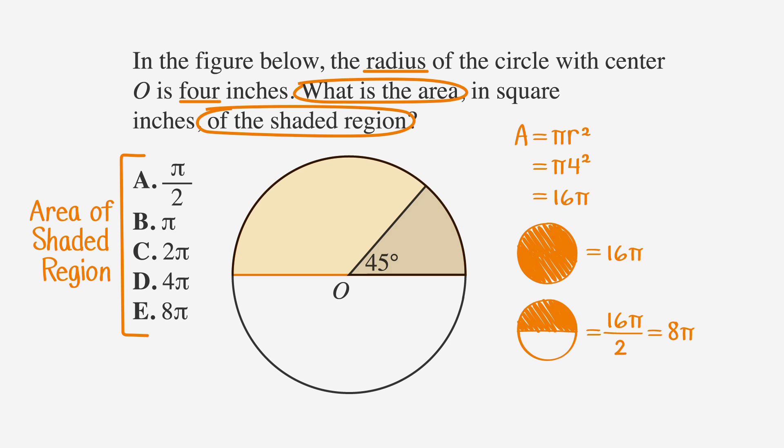It's definitely not 8π, choice E. A half of a circle is still too much. Let's look at choice D, 4π. A quarter of the circle would be 1 fourth of 16π, or 4π. The area shaded in the figure is definitely smaller than 4π, so we'll cross out D. When we compare the area that's shaded in the drawing to a quarter of the circle, we see that it looks like half of the quarter circle, or 2π. That's choice C, the same answer we got when we used the formula.